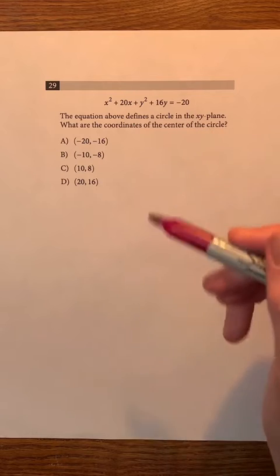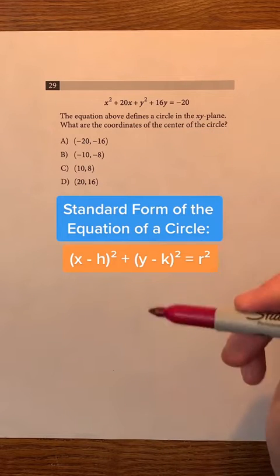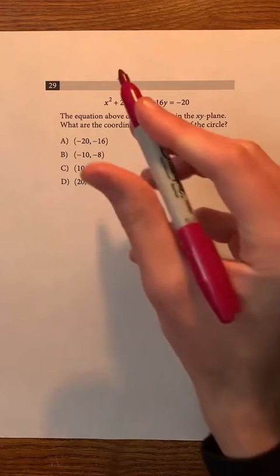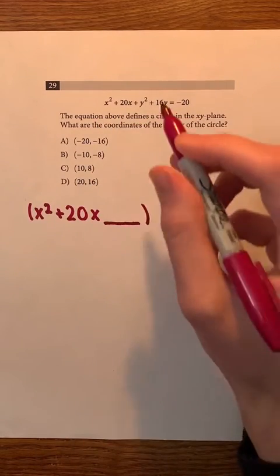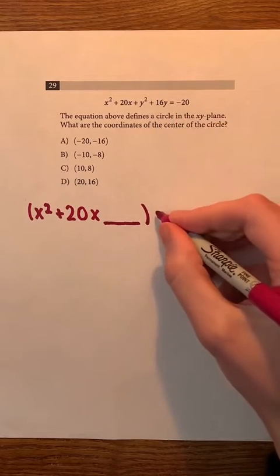First, let's convert the equation into the standard form of the equation of a circle by completing the square. We're gonna do this by grouping x squared plus 20x together and leaving a space. We're gonna do the same thing for y squared plus 16y.